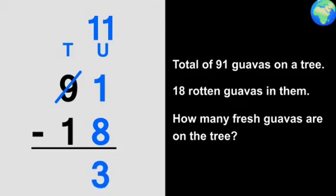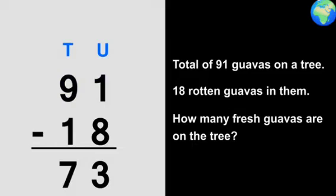We will write 3 like this here below the unit place. As we have borrowed 1 from 9, it will become 8. Now, 8 minus 1 is 7. We will write it here below the tens part like this. 91 minus 18 is equal to 73.